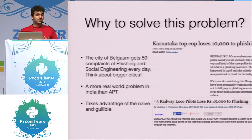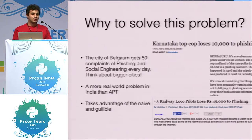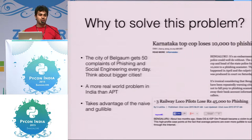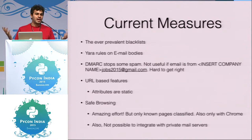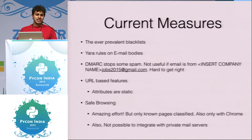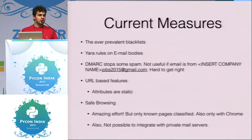It gets even more difficult when you consider that the Director General of Police of Karnataka lost money because he fell victim to a phishing scam. In today's world, we have ever-prevalent blacklists — you can download a list of URLs every hour that tells you which URLs are now malicious or hosting detrimental content.